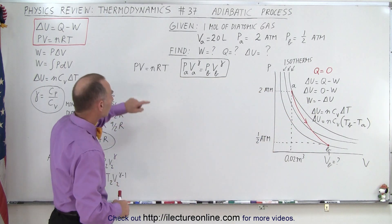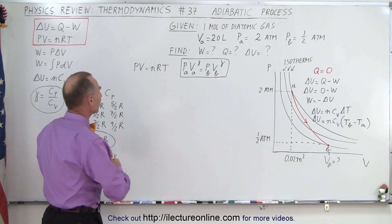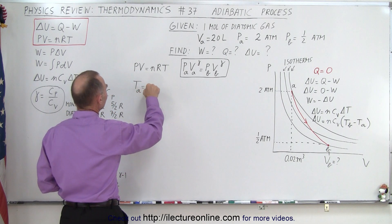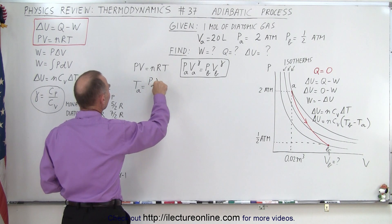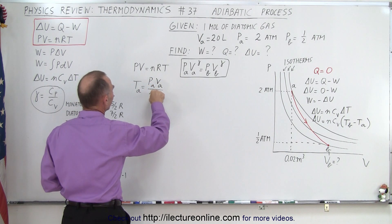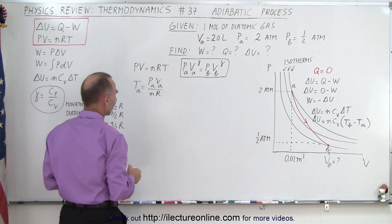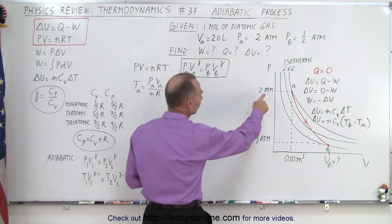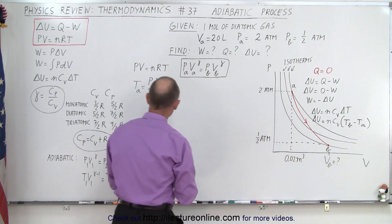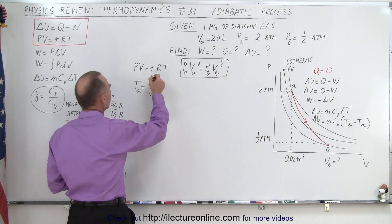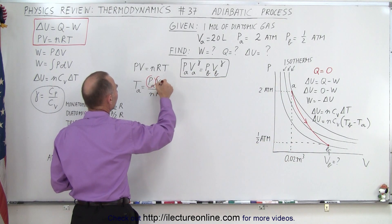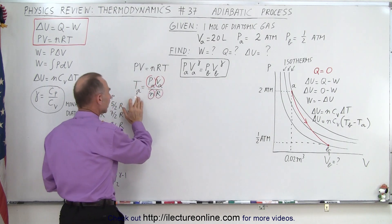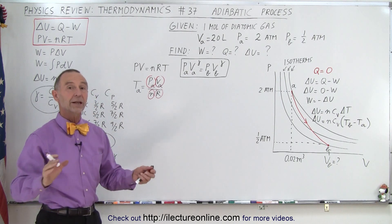So we're going to utilize PV equals NRT, so when we set this equation up we get that the temperature at A is equal to the pressure at A times the volume at A divided by the number of moles times the gas constant. So when we take a look and see what's given, they give us the pressure at A and the volume at A. So in other words, we know the pressure at A, we know the volume at A, we know the number of moles, we know the gas constant, we can calculate the temperature at A without any problems.